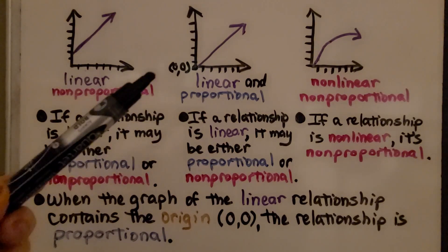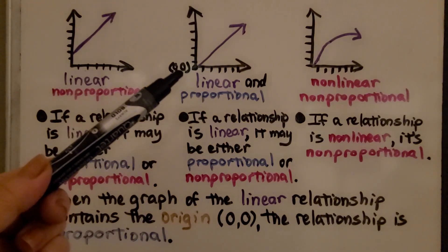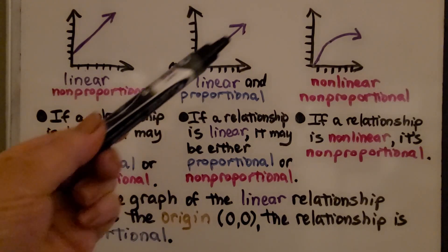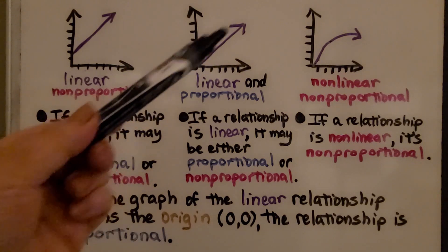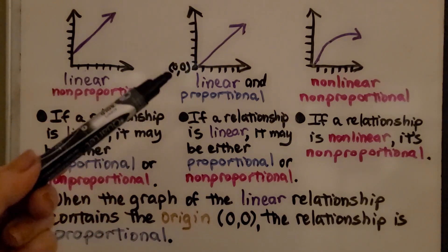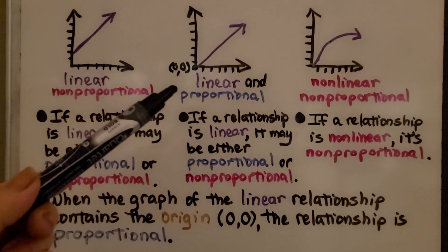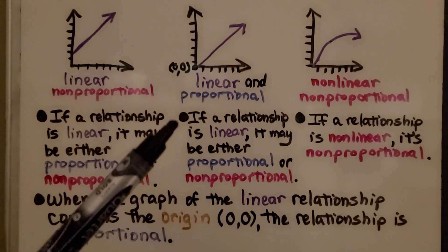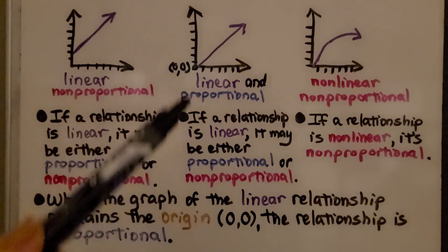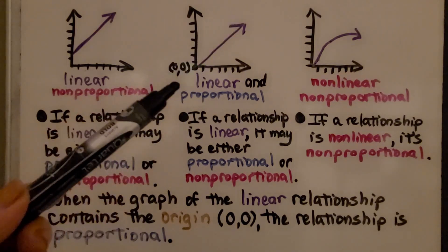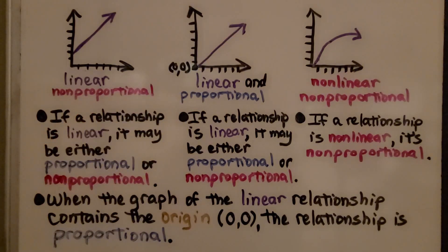For this one, it is going through the origin. Not only is it a straight line — so it's linear — but it's going through the origin, so it's proportional. If a relationship is linear, it may be either proportional or non-proportional, and in this case it is proportional.